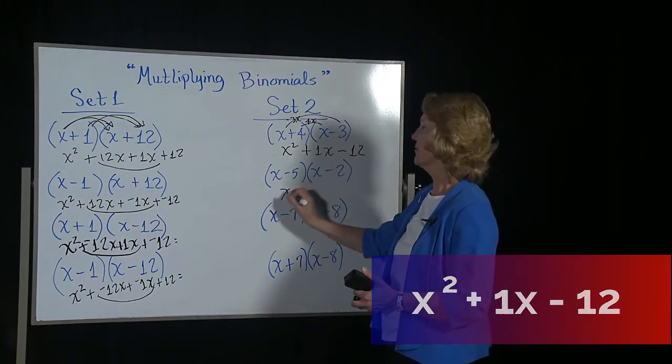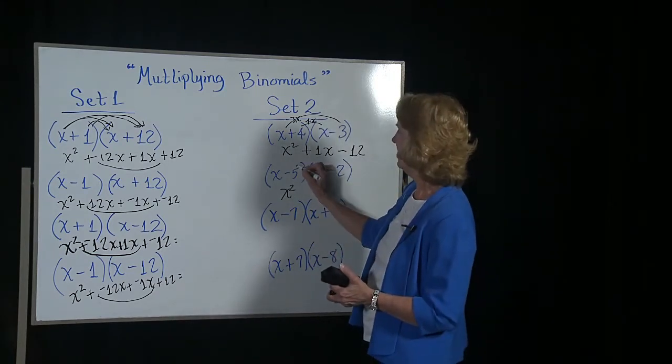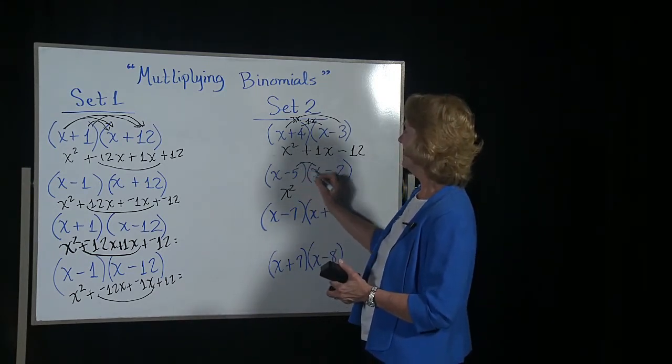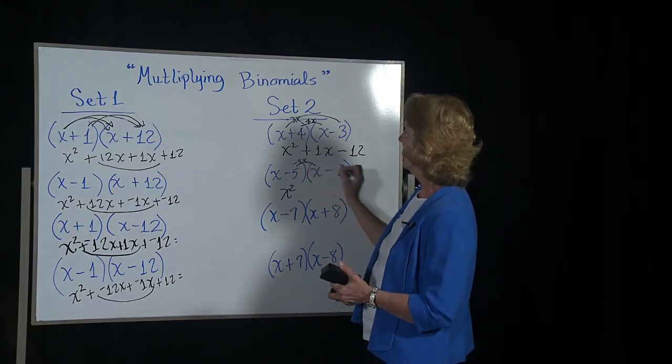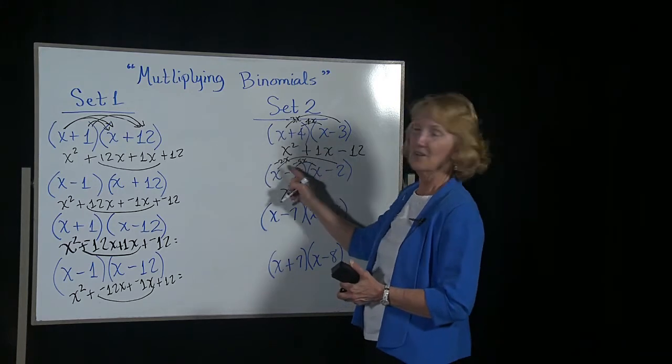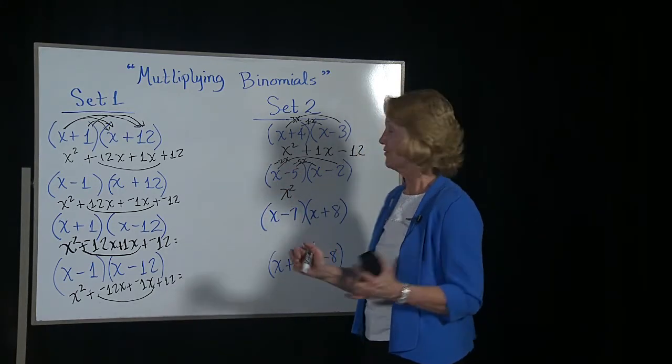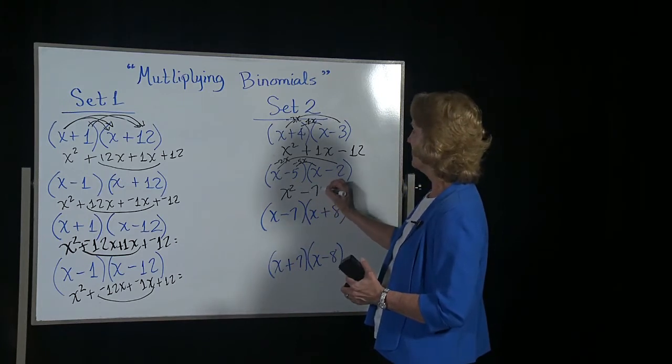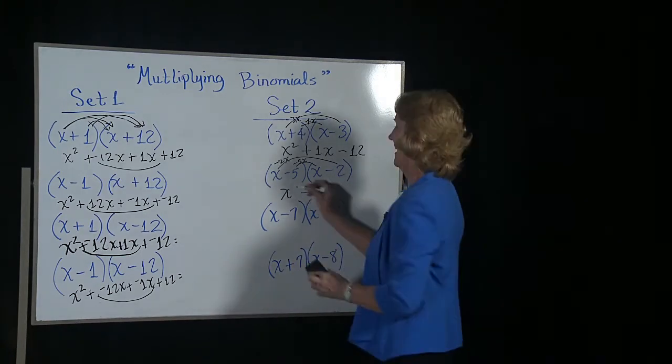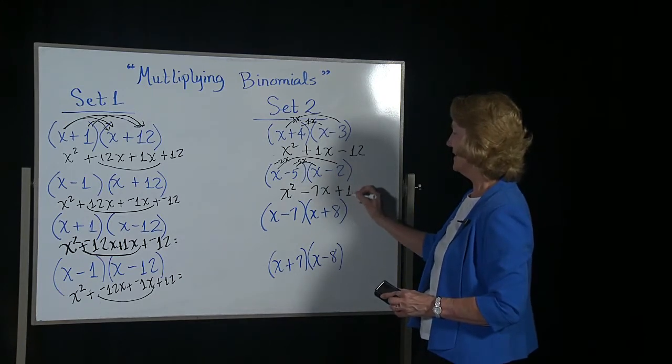x times x starts you out with x squared. Then this becomes negative 5x and this becomes negative 2x. A negative 5x plus negative 2x, it's like you're in debt, in more debt, you're in worse debt, so a negative 7x. Negative 5 times negative 2 becomes a positive 10.